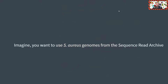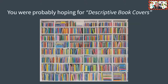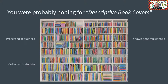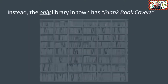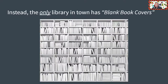I'll keep those imagination hats on just a little bit longer, but for some of you, you know this next bit to be a reality. Imagine you want to use Staph aureus genomes from the Sequence Read Archive. You were probably hoping for descriptive book covers: processed sequences so you can pick up the results you want, collected metadata so you know all about the samples, genomic context so you know about antibiotic resistance or virulence genes, and the ability to screen so you can select the genomes that fit your study. But instead, you get raw unprocessed sequences, only as much metadata as the submitter provides, you know nothing about the actual sequences, and you cannot reliably select samples that fit your study.